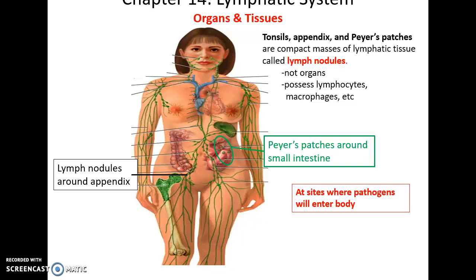Specific structures only in the lymphatic system include the tonsils, the appendix, and the Peyer's patches. In these areas you have lymph nodules — not quite organs, because they're only made up of lymphatic tissue, but they are very important. They possess lymphocytes, macrophages, etc. The tonsils are in the pharyngeal area, the Peyer's patches are lymph nodules found around the small intestine, and there are many lymph nodes around the appendix — areas where pathogens can be a problem.